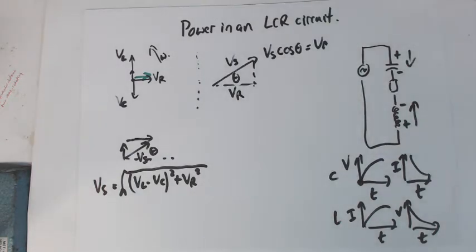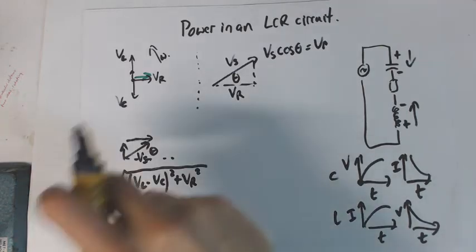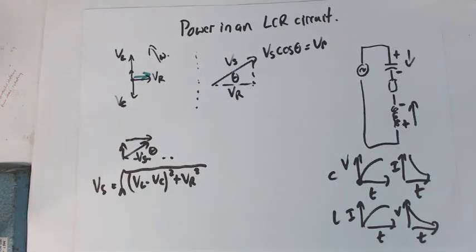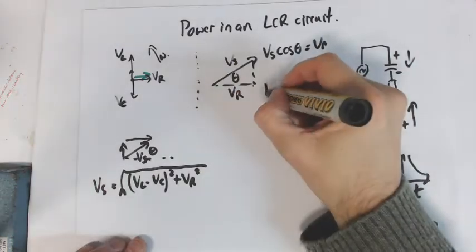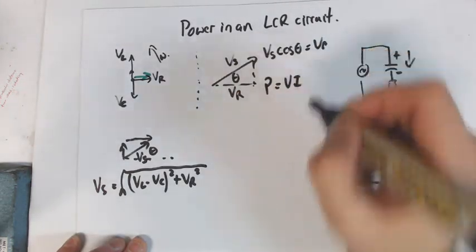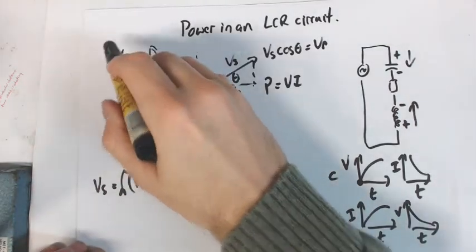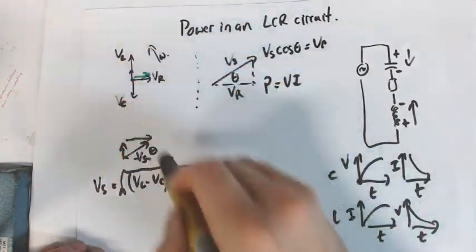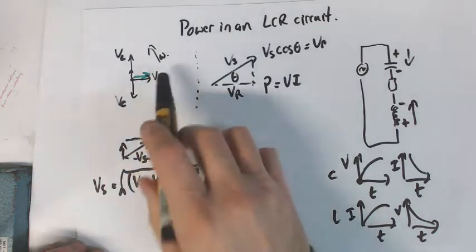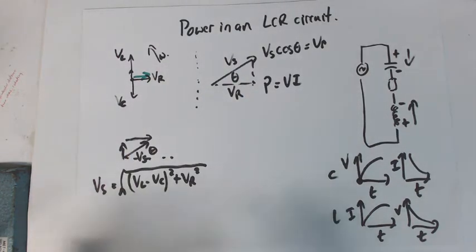Now power in these circuits is only expended in the resistor. So we all know that power equals VI, but which V? We don't use the V on the inductor, we don't use the V on the capacitor, we don't use Vs, we just use voltage on the resistor because that's the only component that's actually expending power as heat and losing power.